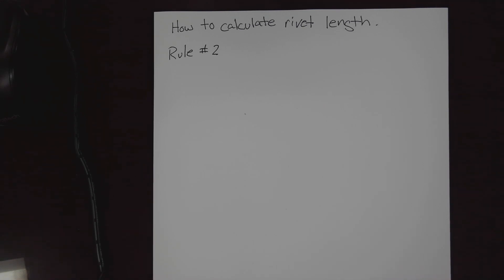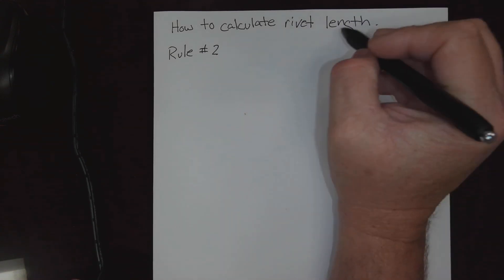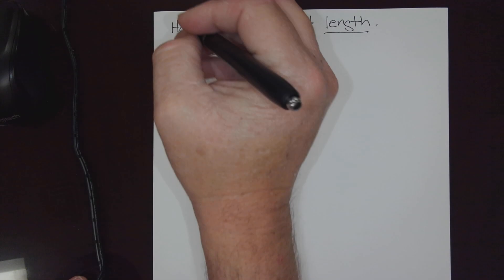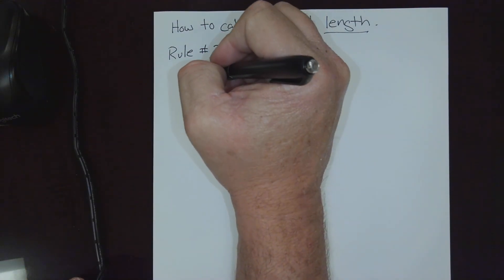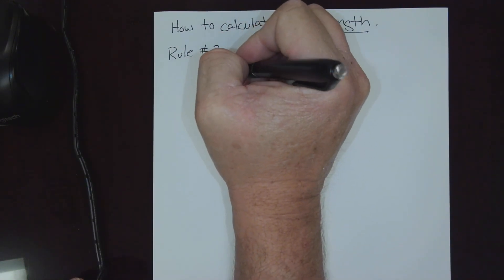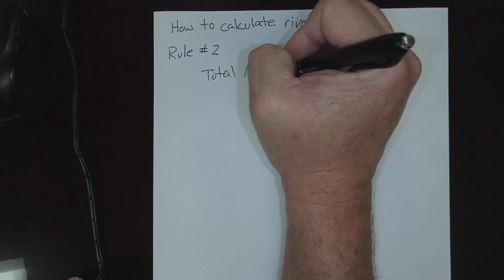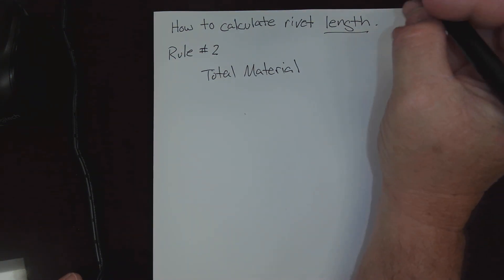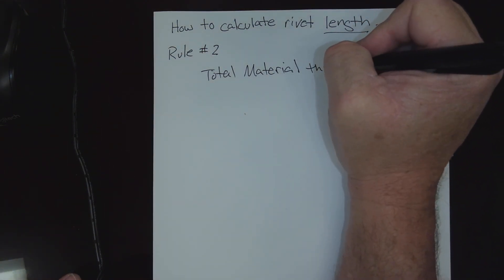We're going to look at Rule Number Two when calculating the proper size rivets. Rule Number One was to solve for diameter, which we covered: three times the thickest sheet and then round up. Rule Number Two focuses on length, and it's simply this: total material thickness. We take all of our stack up, no matter how many sheets of metal are there, and get our total material thickness.